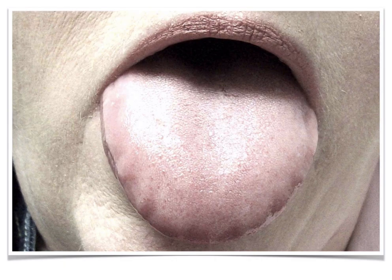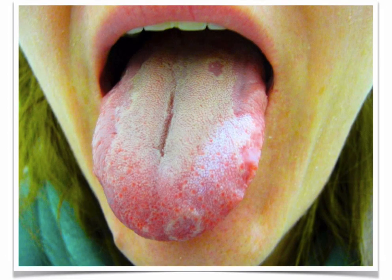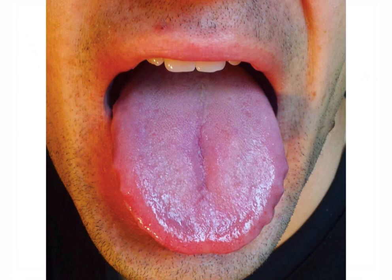A typical pale tongue with teeth marks indicates spleen qi deficiency — pale with teeth marks. Another tongue has sores and strawberry prickles indicating toxicity, a nice crack in the stomach area indicating yin deficiency in the stomach, and a very yellow coating in the center and root showing lots of heat. A purple tongue with teeth marks shows blood stasis combined with spleen qi deficiency — likely liver overacting on spleen — with a crack in the center beginning to show stomach yin deficiency, and a reddening tip suggesting heart heat as well.